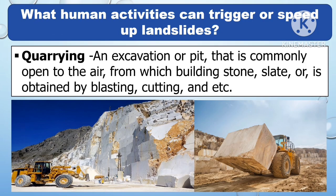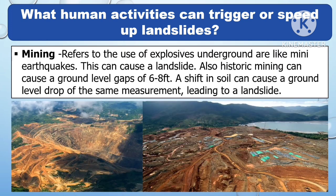The following are the human activities that can trigger or speed up landslides. The first one is quarrying. It is an excavation or pit that is commonly open to the air from which building stone, slate, or other materials are obtained by blasting, cutting, and other methods.